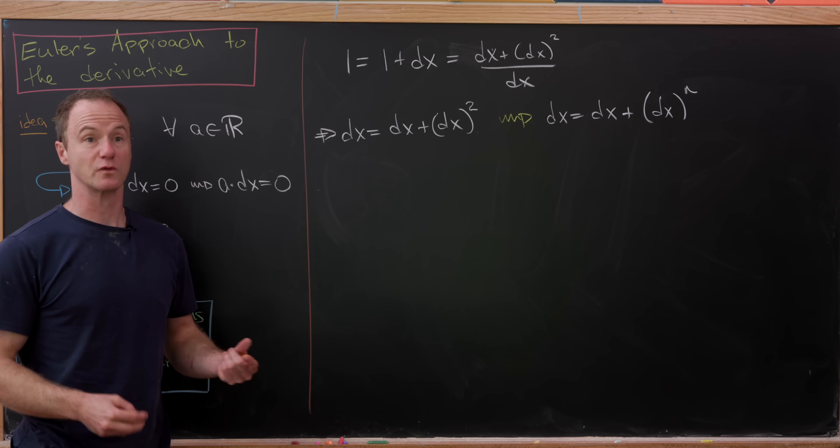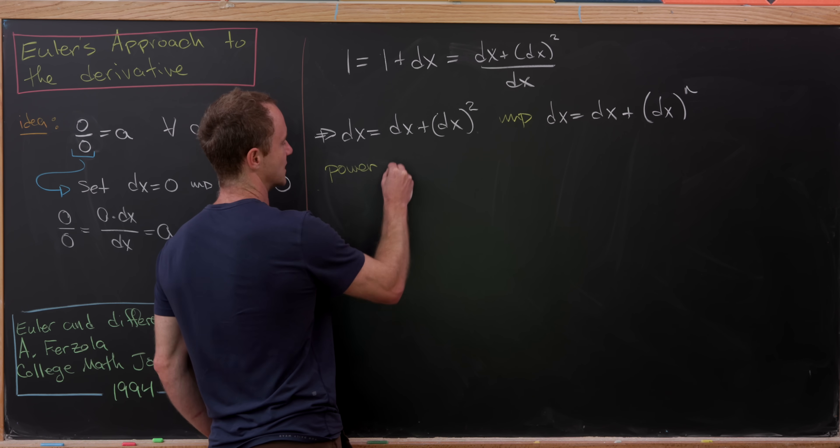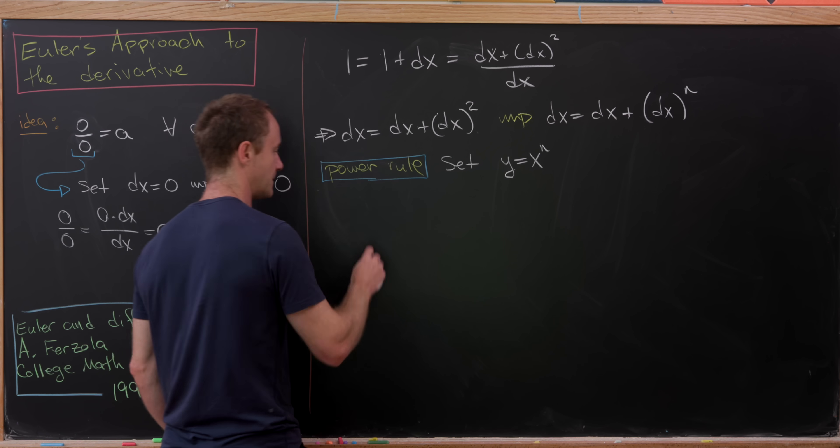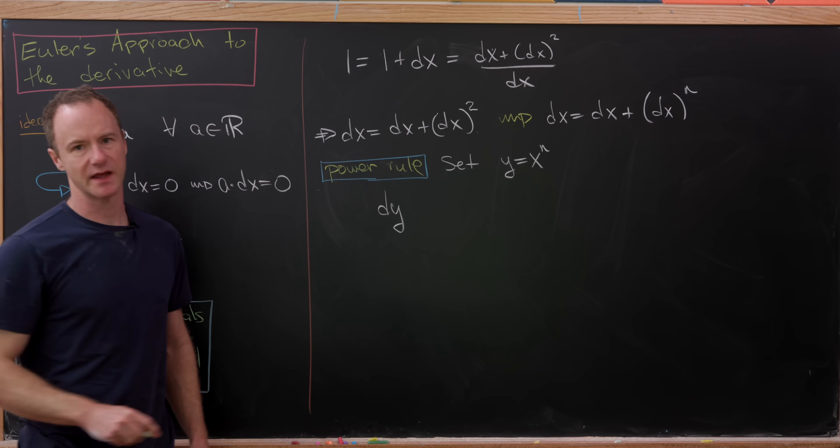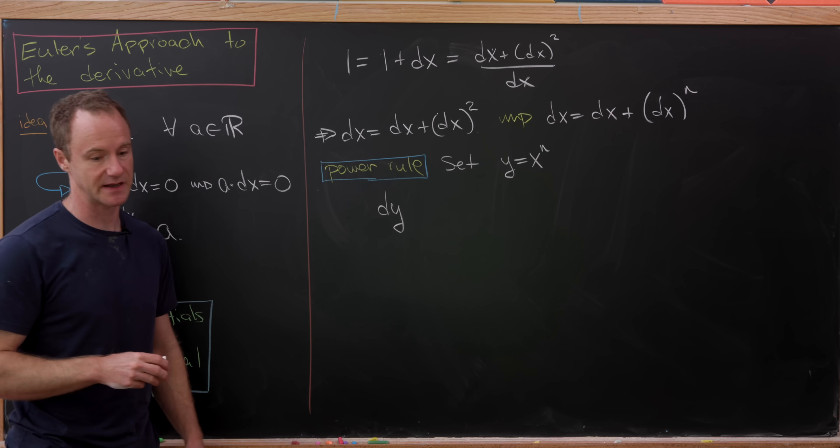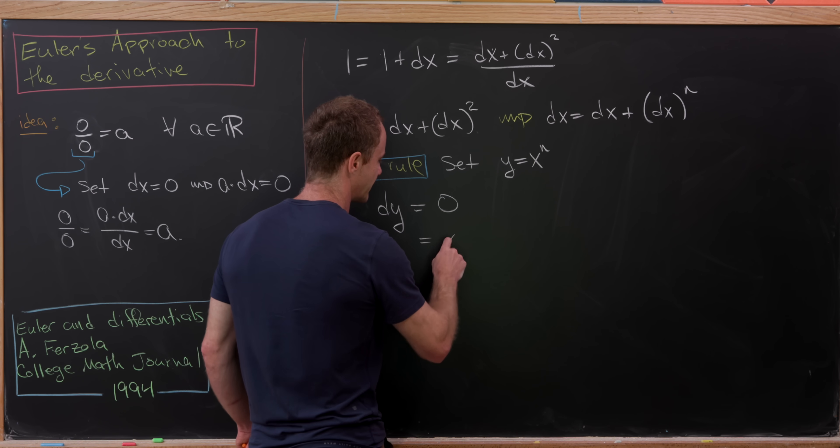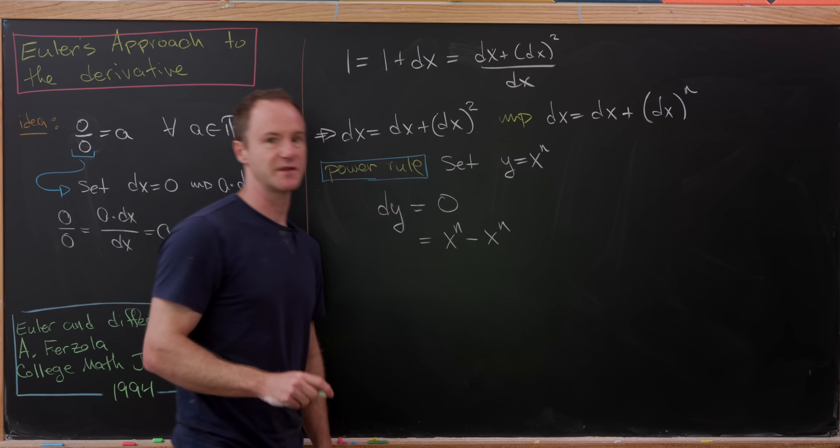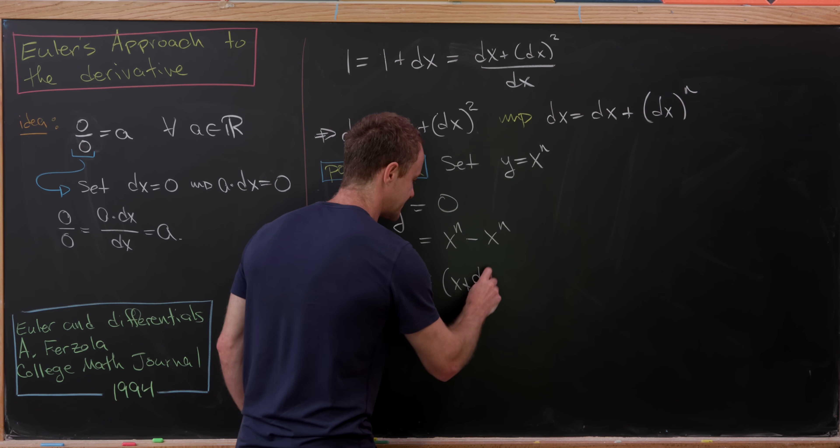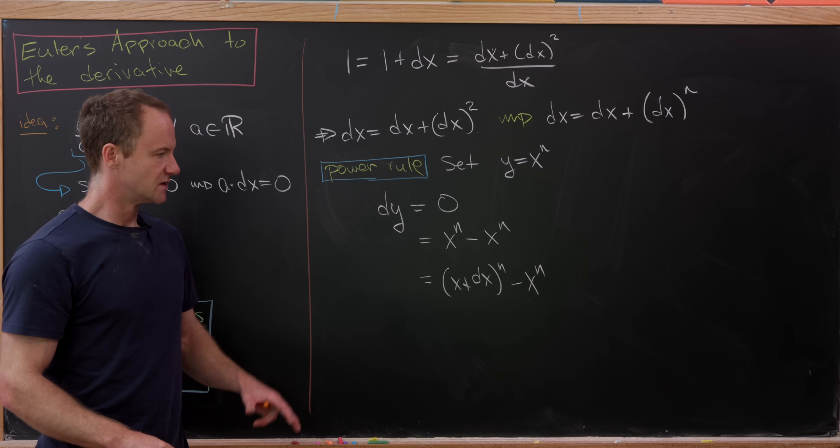So, maybe our first goal here should be to reproduce a really simple derivative rule, like perhaps the power rule, using this formalism. So, let's do that. Let's start by setting y equal to x to the n. And now, we want to calculate dy. So, we can think about that as the derivative of y, or the differential of this function defined by y equals x to the n. But notice dy is just another name for zero. But then, zero can be rewritten as x to the n minus x to the n. So, I think that's pretty clear. But then, this first x to the n can be written as x plus dx raised to the n power. And that's because dx is simply equal to zero. So, there's the idea.